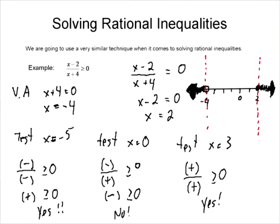So what's our solution? We know that x has to be less than negative 4, and x has to be greater than or equal to 2. That is our solution. Since it's an inequality, we express the answer as an inequality.